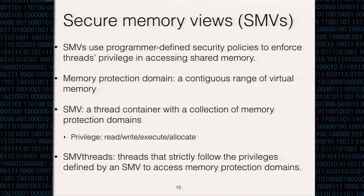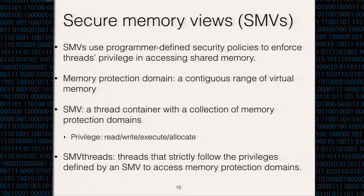To address these challenges, we propose Secure Memory Views, which we call SMVs, allowing the programmer to selectively isolate process address space based on user-defined policy. We define three abstractions to manage process memory and achieve intraprocess isolation. First, a memory protection domain is a contiguous range of virtual memory addresses. Second, a secure memory view is a thread container with a collection of memory protection domains. An SMV defines whether threads could read, write, execute, or allocate data to a set of memory protection domains. Finally, we create a special thread called SMV threads that strictly follows the privilege defined by SMVs.